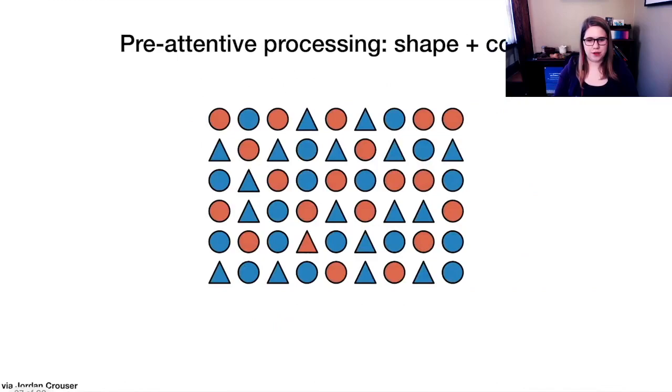If we throw together shape and color, can you pick out an object that looks different from the rest here? I definitely have some blue circles all over the place. I've got some orange circles all over the place. I've got some blue triangles all over the place. I only have one orange triangle. So I can still pick out that one that's different, even when I've got both shape and color as pre-attentive processes.